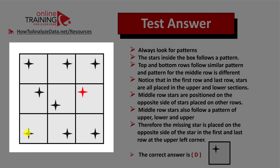The middle row stars are placed on the opposite sides of the top and bottom row stars. In the first column, the middle row star is in the upper right corner, versus the top and bottom rows which are placed on the left side. The same pattern applies in the middle column, and that same pattern will be applicable in the right column as well.